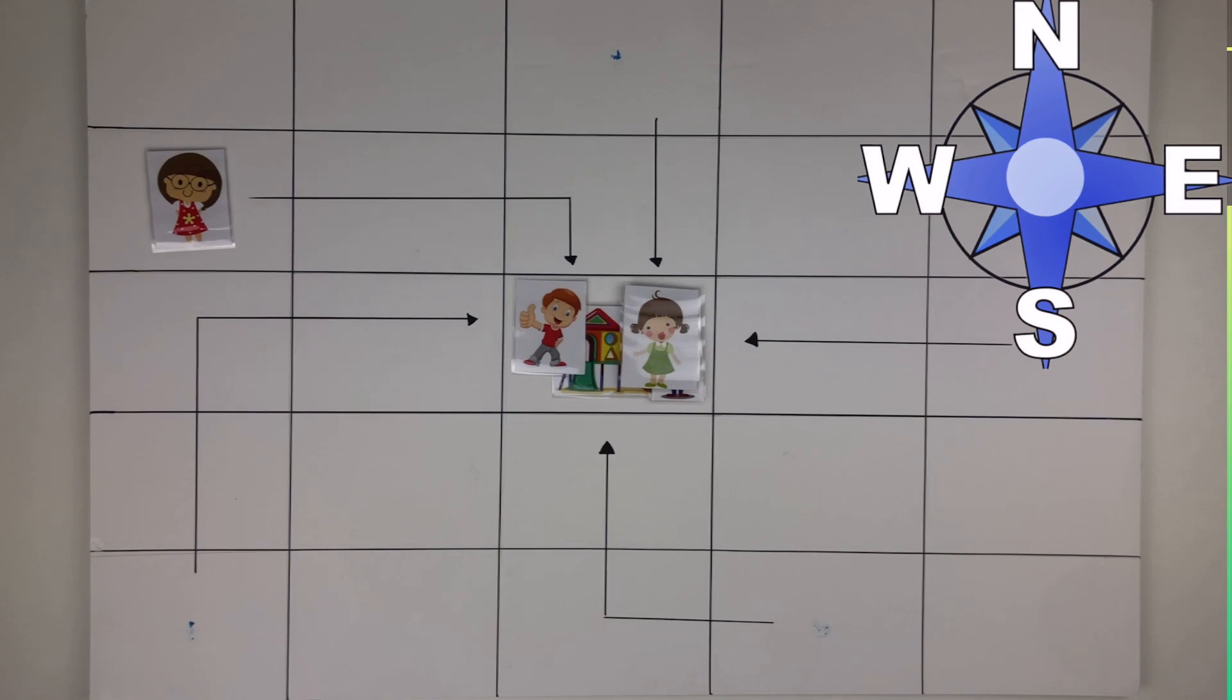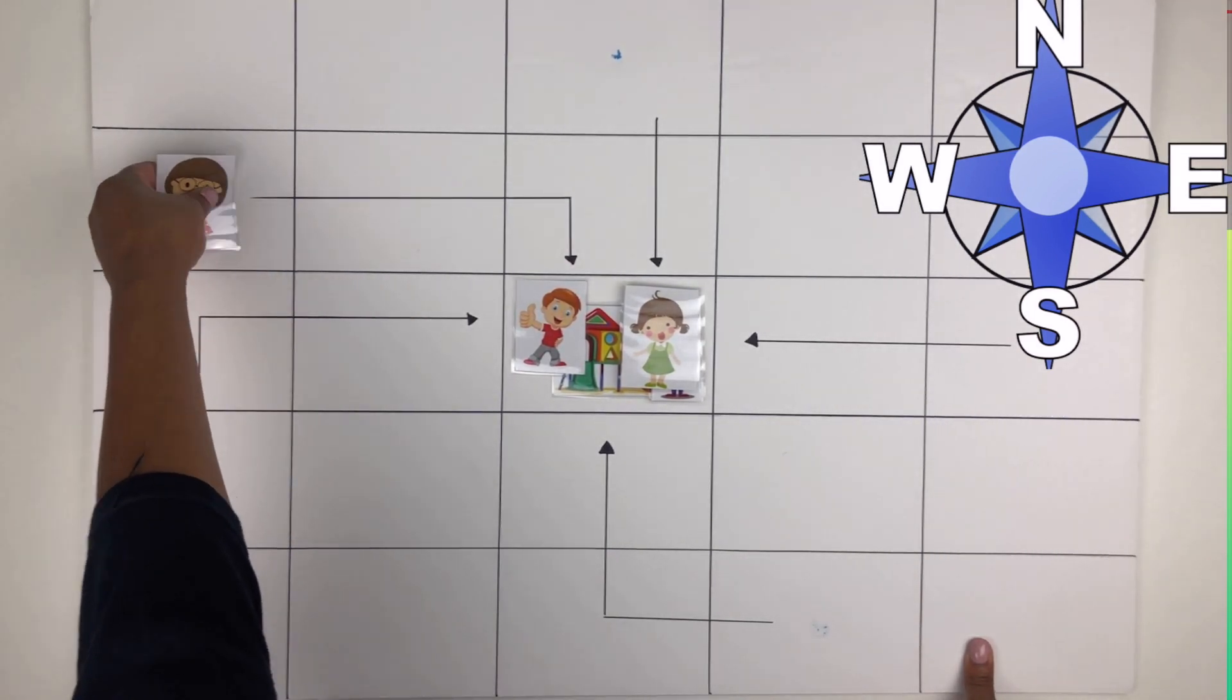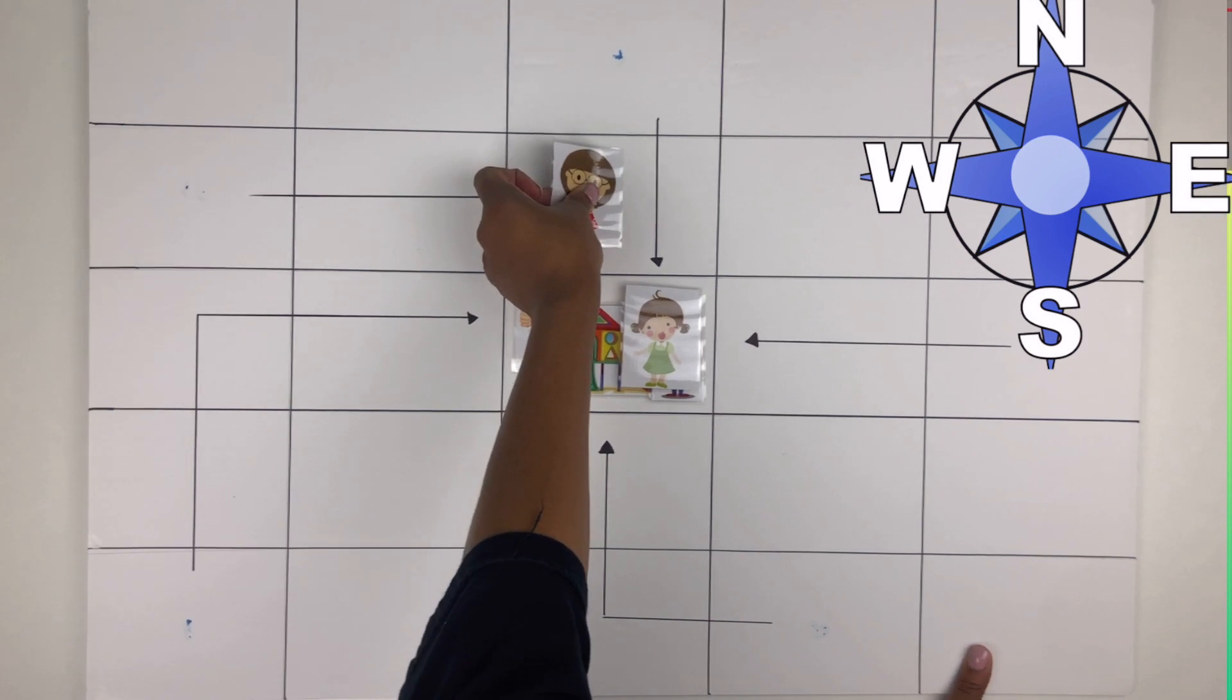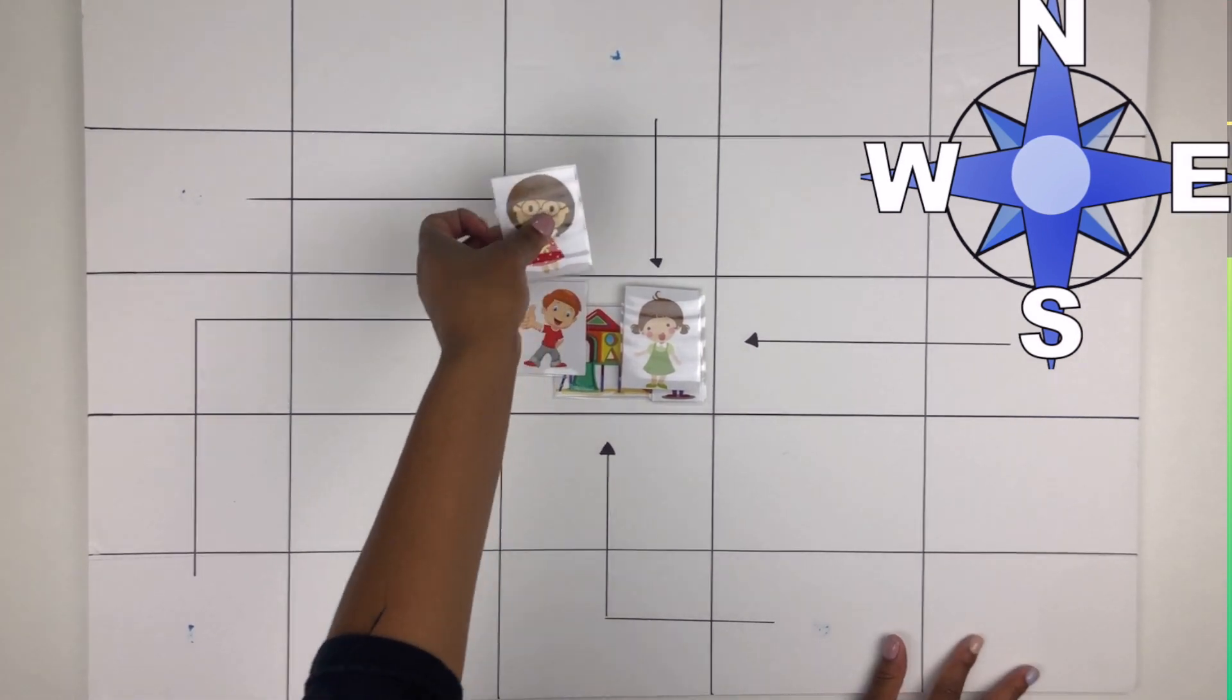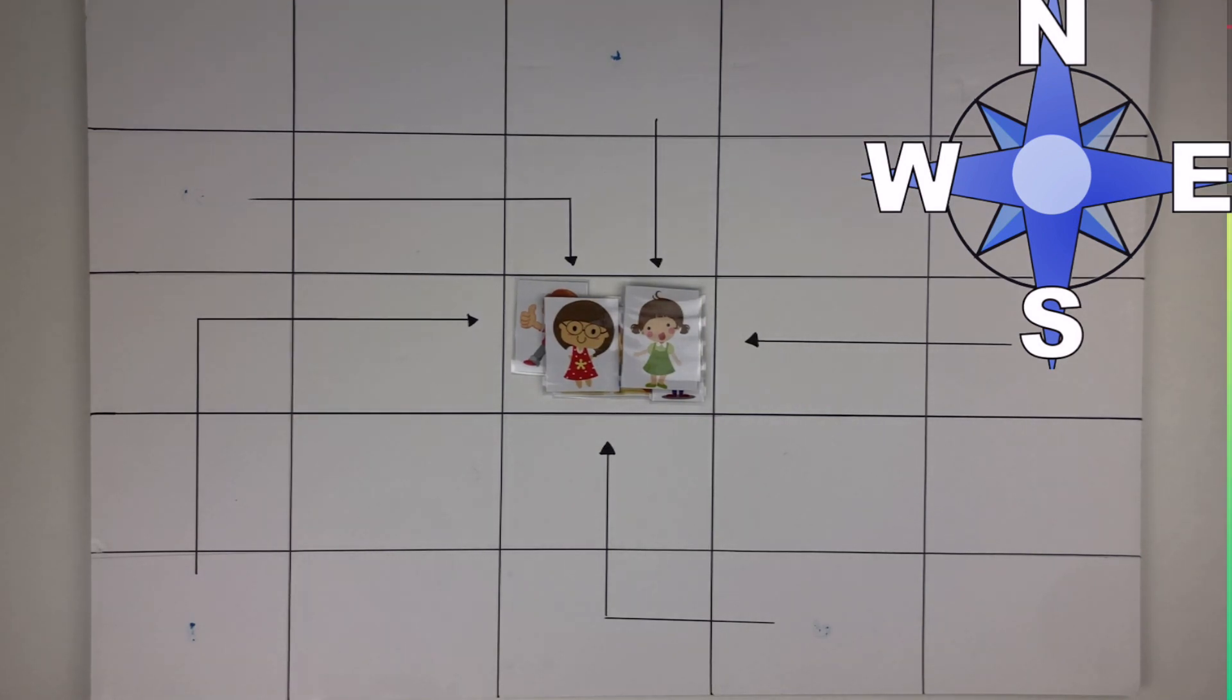And last but certainly not least, Emily has to take two steps east and one step south to get to the park. Great! All of our friends are at the park and you used our cardinal directions.